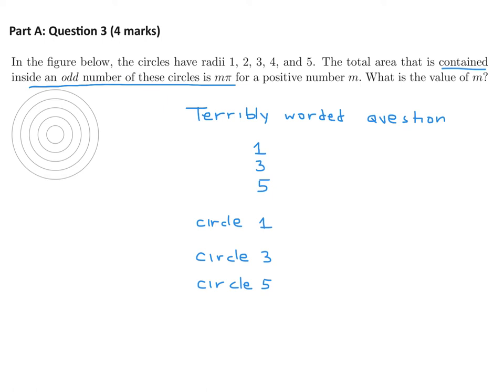But it's even more confusing than that because, for example, the area inside circle one, that's easy, right? Just that area right there. But what about the area inside circle three? That, apparently, is not the full area inside circle three. It's just the area between circle two and circle three. So that area right there, if you can see, just that area. It's a terrible question, but I'll do the solution.